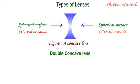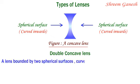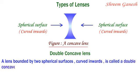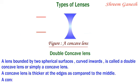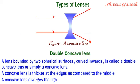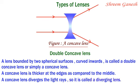Double concave lens: a lens bounded by two spherical surfaces curved inwards is called a double concave lens, or simply a concave lens. A concave lens is thicker at the edges as compared to the middle. A concave lens diverges the light rays, so it is called a diverging lens.